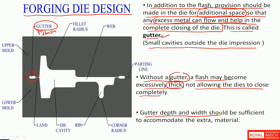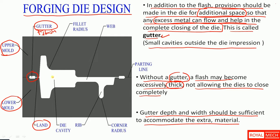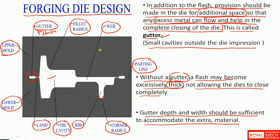Gutter depth and width should be sufficient to accommodate the extra material. Now let's look at the parts in the die design: upper mold, lower mold, land, die cavity, rib, corner radius, parting line — same as in casting — web, and fillet radius. These are the parts in the dies.